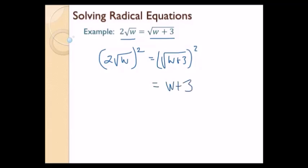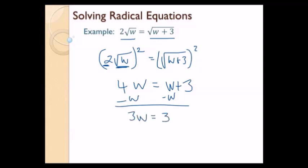On the left-hand side, I need to take this in steps and chunks. I'm going to square the 2 — so 2 squared is going to give me 4. Now I'm going to square the square root of W — so square root of W times square root of W is W. So now I just see a regular equation: 4W equals W plus 3. I'm going to subtract W from both sides, so I end up with 3W equals 3, divided by 3, W equals 1. Let's plug it back in to make sure it works. Left-hand side: square root of 1 is 1, 2 times 1 is 2. Right-hand side: 1 plus 3 is 4, square root of 4 is 2. I end up with 2 on both sides. So that means W equals 1 is my final answer.